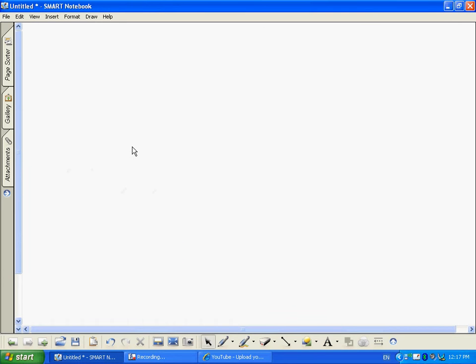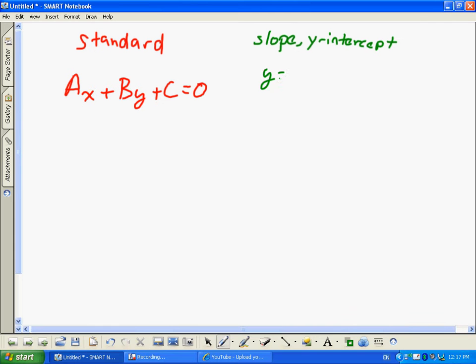We're working with three different formulas. We have our standard, I believe I did it in red. Our standard formula dealt with Ax+By+C=0. We also have our slope y-intercept. Slope y-intercept was y=mx+b.